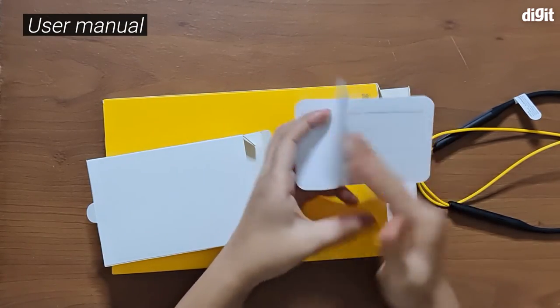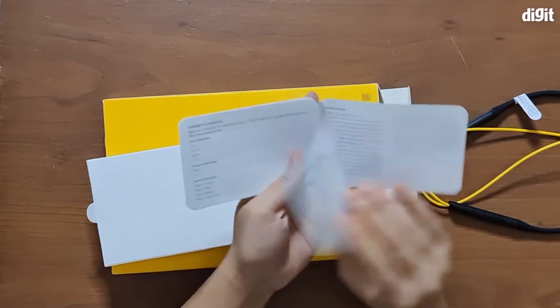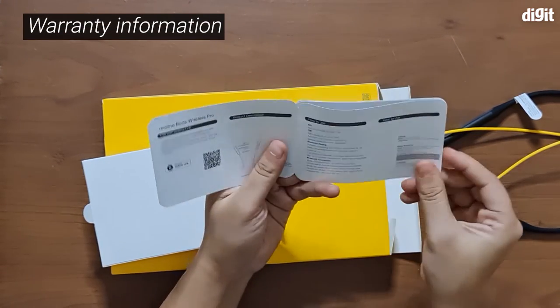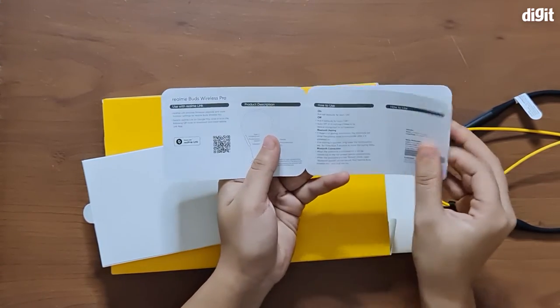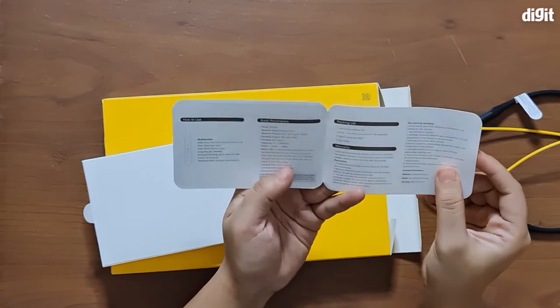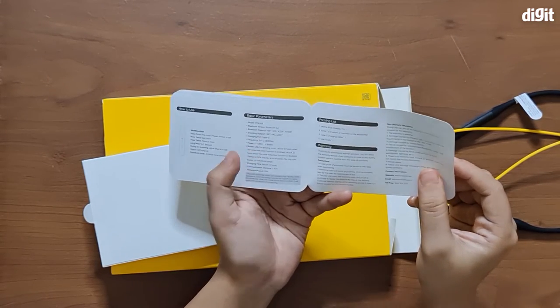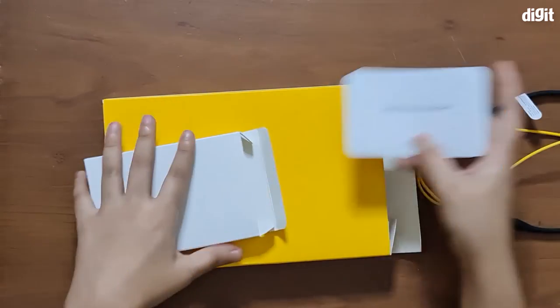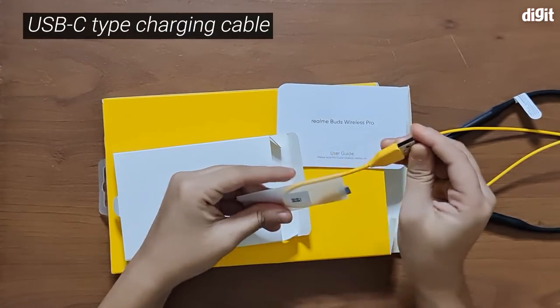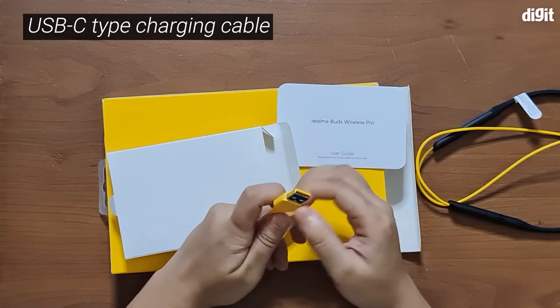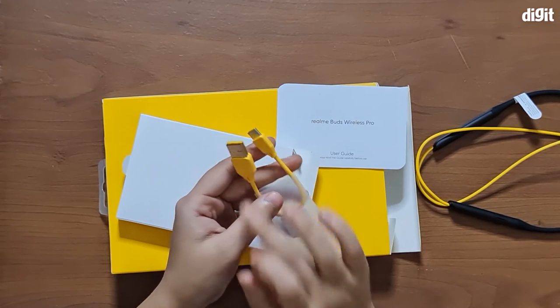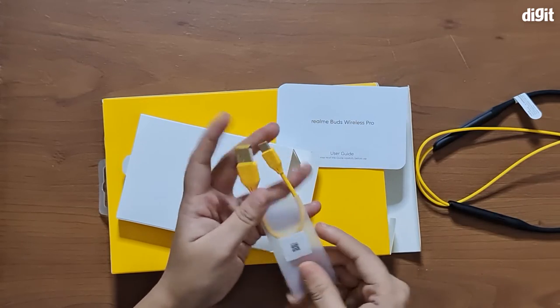There's a user manual with warranty information, how to use manual, how to pair, how to use the buttons, specifications of the device, and what's in the box. Let's set this aside. The charging cable in here is a standard USB Type-A to Type-C charging cable. It's rather short and it comes in the yellow color, which is consistent across the packaging as well as the earphones.